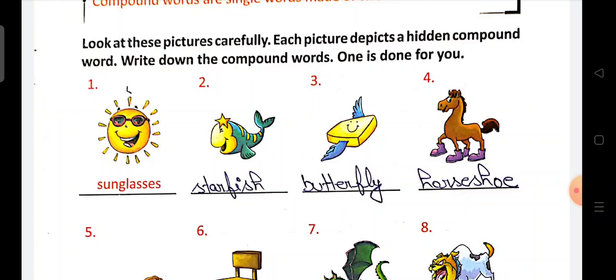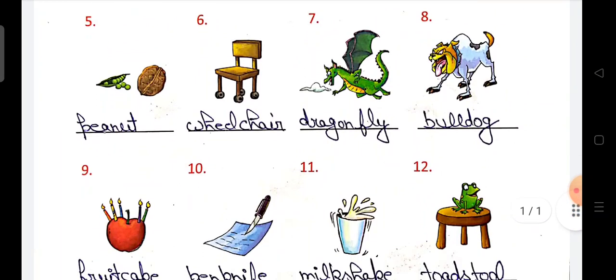Next, number 5, look at - one picture is pea and another picture is nut, so this will be peanut. Number 6 is wheelchair.